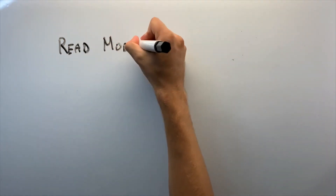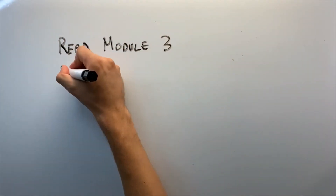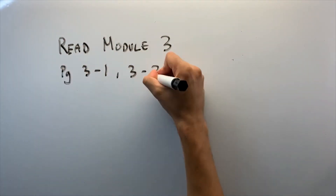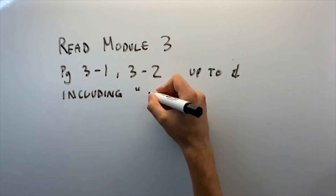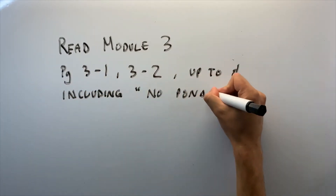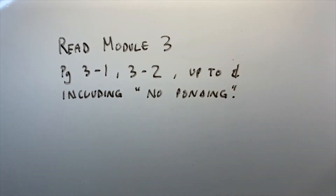Before watching this lecture, you should read Module 3, pages 3-1 and 3-2, up to and including the section called No Ponding.